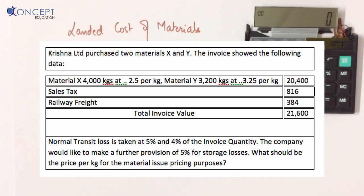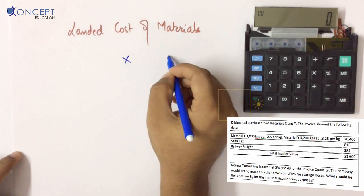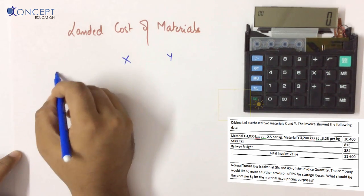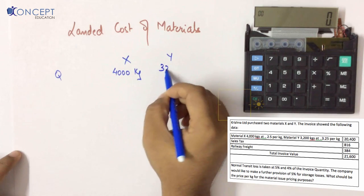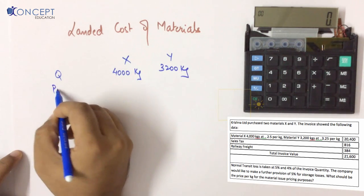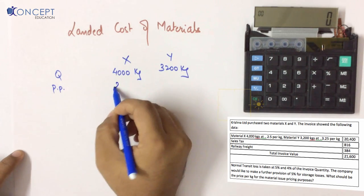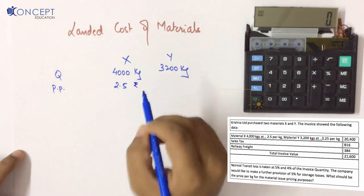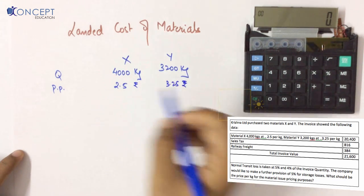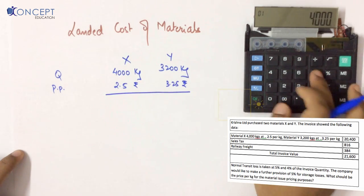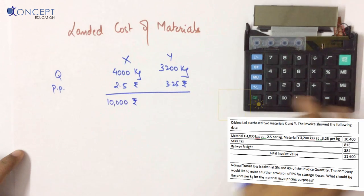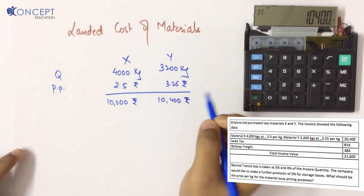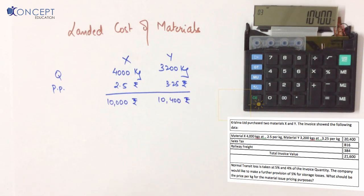Crystal Limited purchases two materials X and Y. The invoice details: Material X — 4,000 kg purchased at 2.5 rupees per kg, giving a value of 10,000 rupees. Material Y — 3,200 kg at 3.25 rupees per kg, giving 10,400 rupees. Now we need to do bifurcation of the total 21,600.